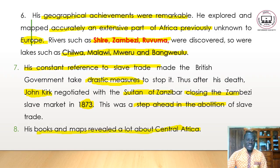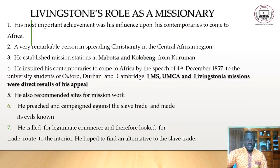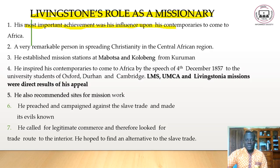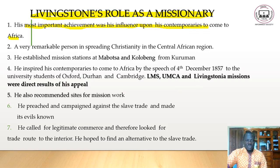As a missionary, Livingstone's most important achievement was influencing his contemporaries to come to Africa and open mission stations. He was a remarkable person in spreading Christianity in central Africa. He established mission stations at Mabotsa and Kolobeng from Kuruman, and inspired contemporaries through his public speech on 4th December 1857, which led to the founding of the Universities' Mission to Central Africa and the Livingstonia Mission.